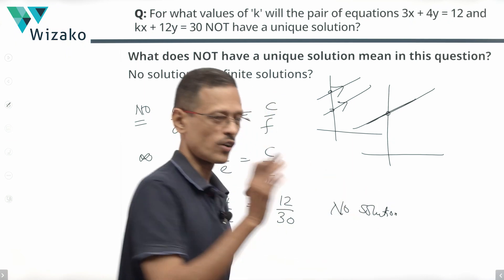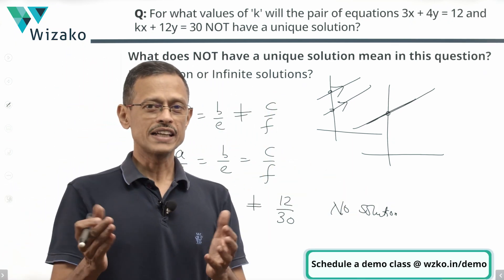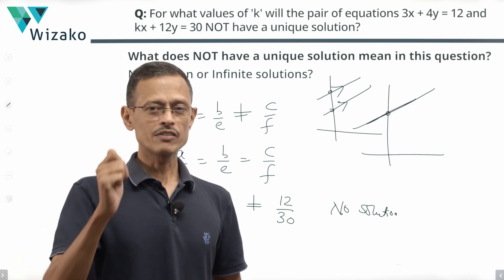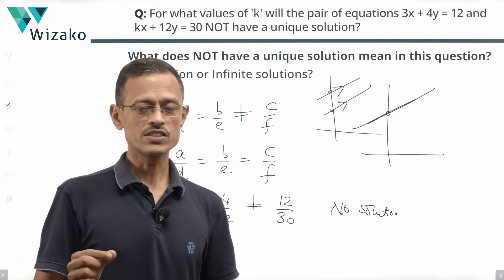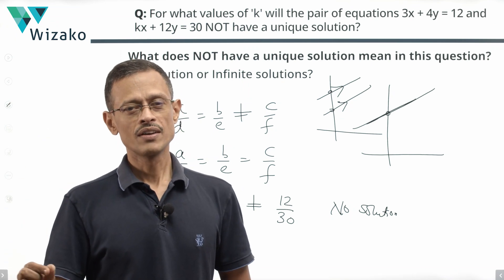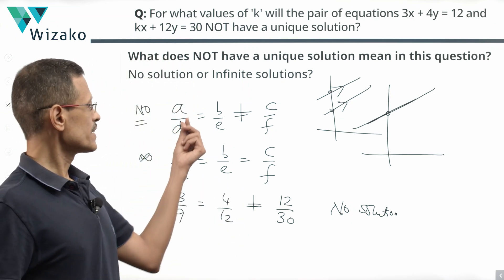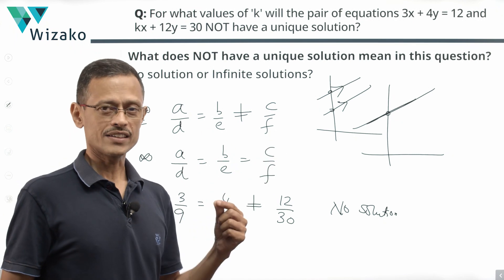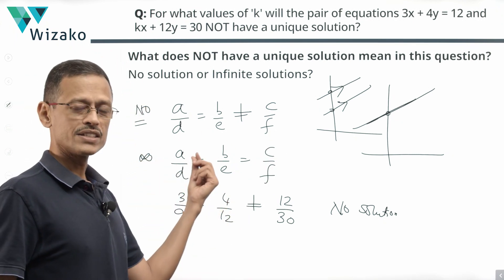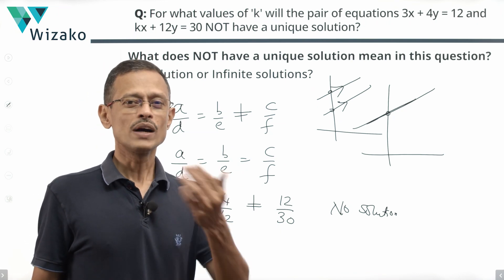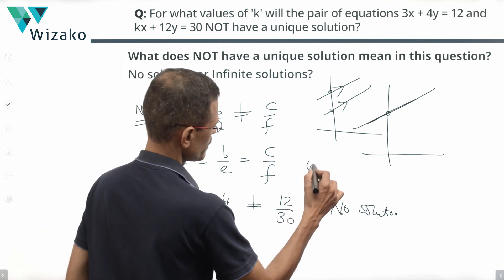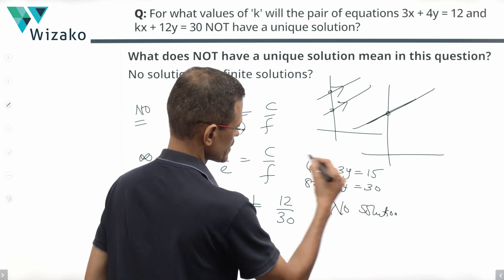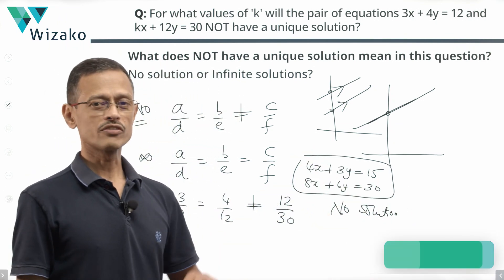The answer to the question is k = 9. To summarize, for a pair of linear equations ax + by + c = 0 and dx + ey + g = 0: they have a unique solution when A/D ≠ B/E; no solution when A/D = B/E ≠ C/F (slopes equal, y-intercepts different — parallel lines); and infinite solutions when A/D = B/E = C/F (one equation is a multiple of the other). For example, 4x + 3y = 15 and 8x + 6y = 30 — the second is just twice the first.